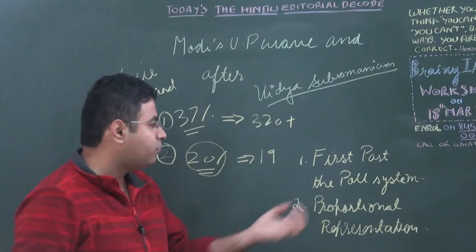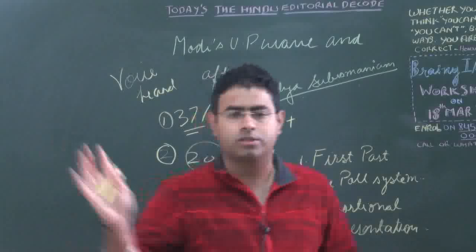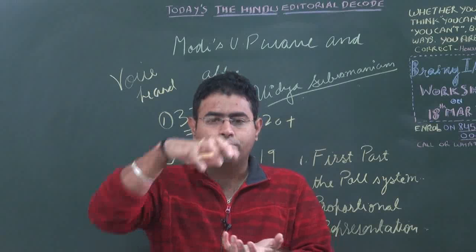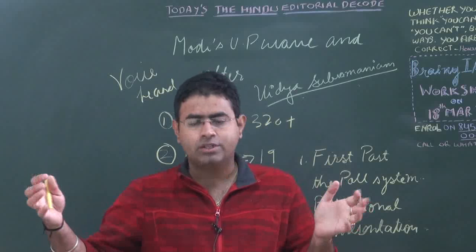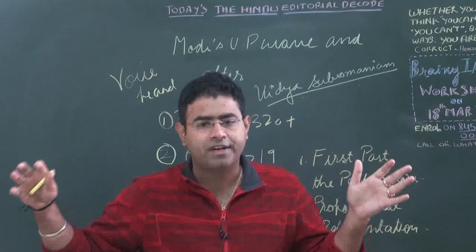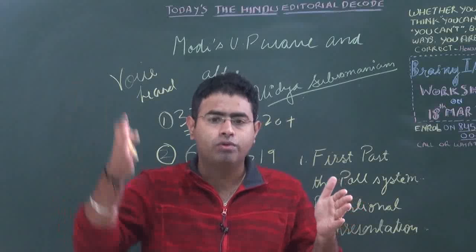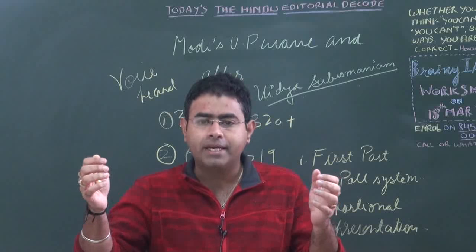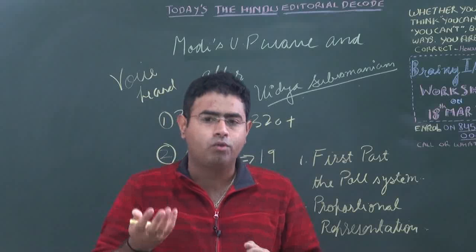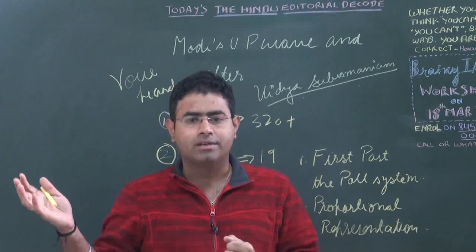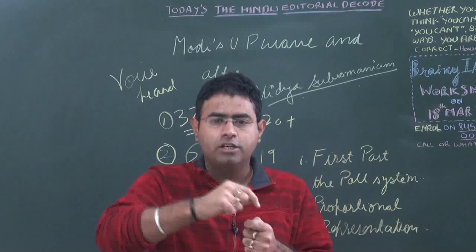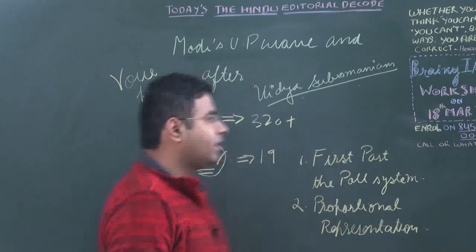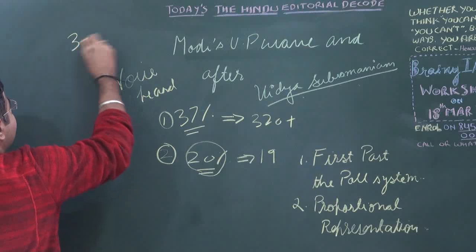What is this First Past the Post system? In the First Past the Post system, we have candidates fighting from one constituency — various candidates belonging to different parties. Out of all the candidates fighting from one constituency, they will be getting different vote shares. Whoever gets more number of votes than the others — whoever is first in terms of votes — will be declared as the winner. This is what is known as the First Past the Post system.